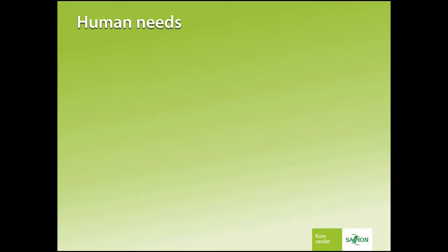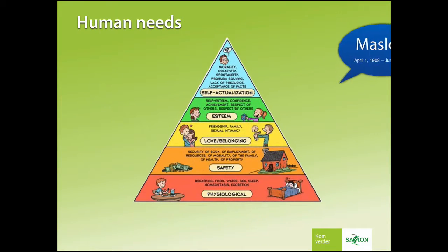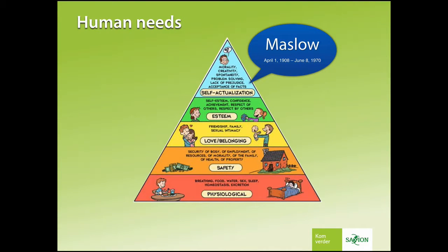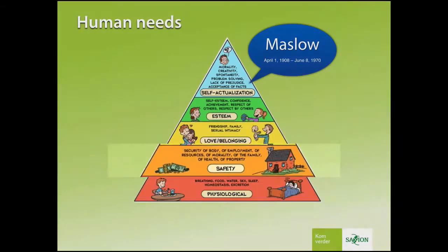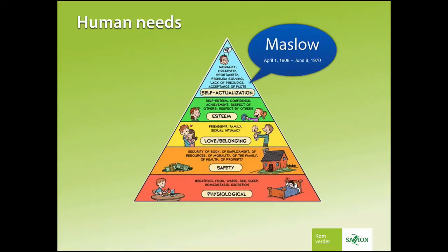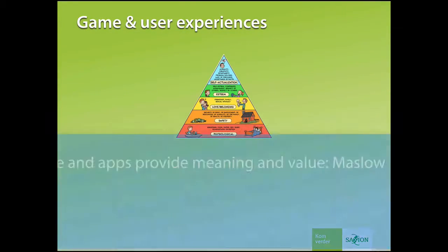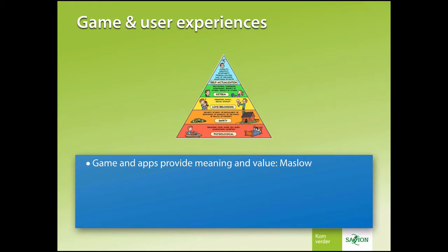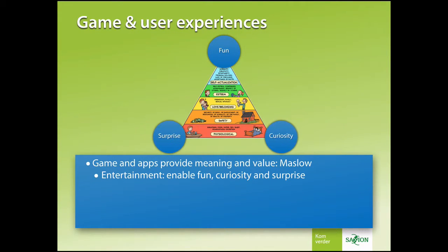What does a player want? Well, the player is human, so let's dive into human needs. Let's take the theory of Maslow. He designed a pyramid with five steps: physiological, safety, love-belonging, self-esteem, and finally self-actualization. With the determination of human needs, we can say that games and apps have to provide meaning and value towards the player. Overall, games are entertainment, so make sure they are fun, trigger curiosity, and add an element of surprise for the player.